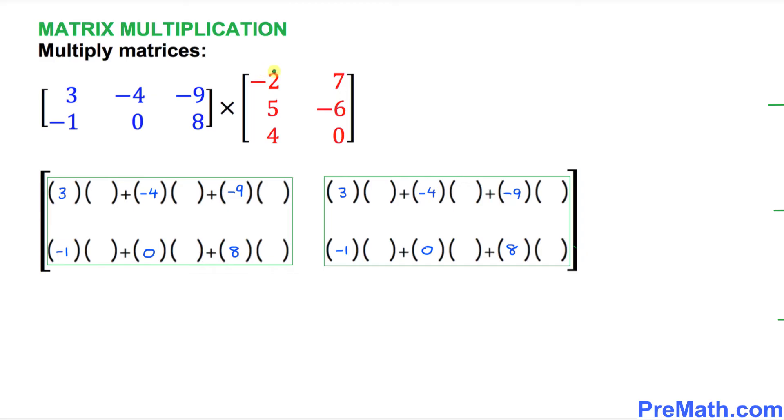Now let's focus on our right-hand side red matrix. Look at this: -2, 5, 4. This column, we're going to convert it into a row. So that's going to become -2, 5, 4. And in the next column: 7, -6, 0. That is going to become a row as well. So 7 is going to go over here, -6, and 0.